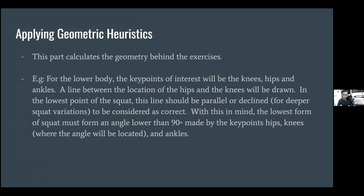For the geometric heuristics, this part calculates the geometry behind the exercises — the technicalities in a geometric point of view. For the lower body, imagine the hips, knees, and ankles creating an angle. When a person is standing, they make a 90-degree angle, and when a person squats, the angle gets smaller. For a squat to be considered correct form, at the lowest peak of the squat there must be an angle of at most 90 degrees or lower. Whenever the lowest point of the squat generates an angle more than 90 degrees it is considered wrong, and it will be reflected to neuron number two of the output layer.